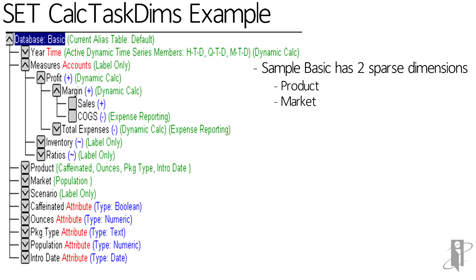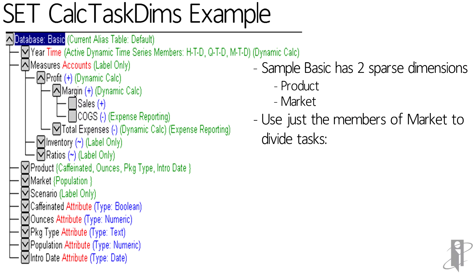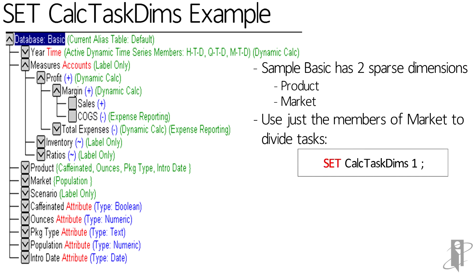Let's say I just want to use the members of the market dimension to parallelize along. I could say SetCalcTaskDims 1, which is also the default. What that'll do is launch all of the different states together. Eventually it's going to have to add those states together to get East, West, South, and Central — so it's only going to use four CPUs.